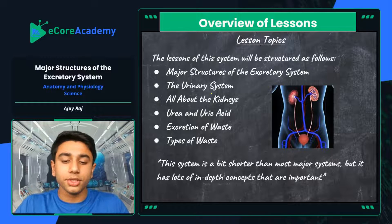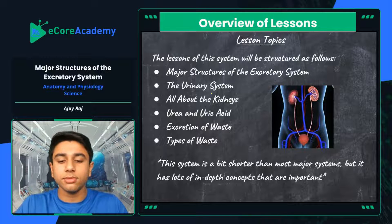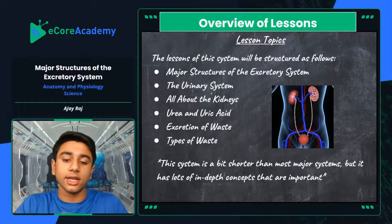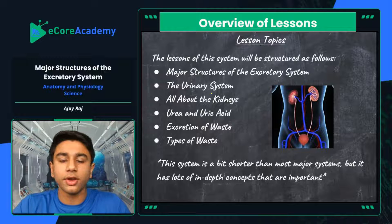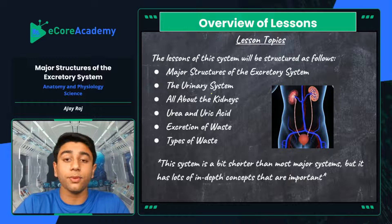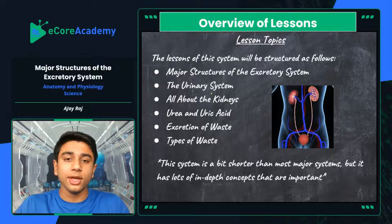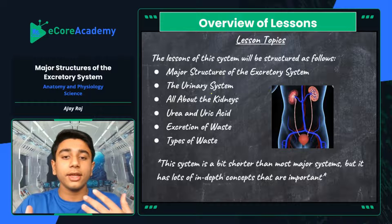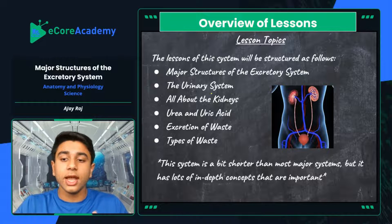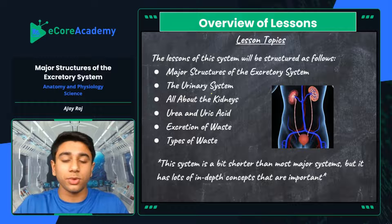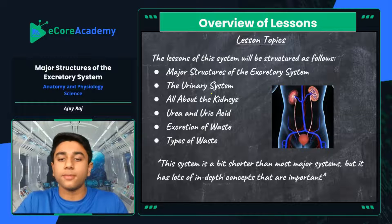This system is a bit shorter than most major systems — it's considered a minor system overall, but it's very important. It has lots of in-depth concepts and it's very essential for all of us to know. Whether you're going into an anatomy and physiology career or just here to understand health risks — how to take care of your excretory system, what it does, what its functions are — these are all common knowledge concepts useful for everyone, because we all have this system and can all relate to it.